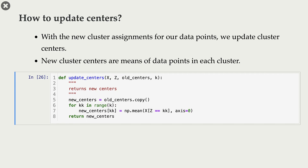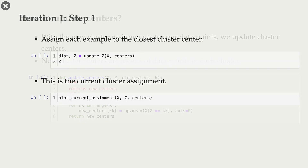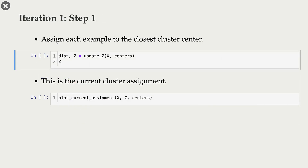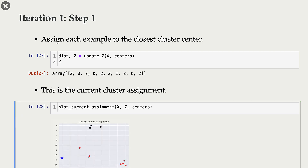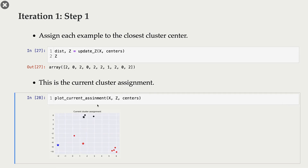The next step is updating our cluster centers. Now that we have new cluster assignments, we compute new cluster centers using a function I've written. In iteration one, we have our random centers and first do cluster assignment — assigning each example to the closest cluster center. This is our new cluster assignment.